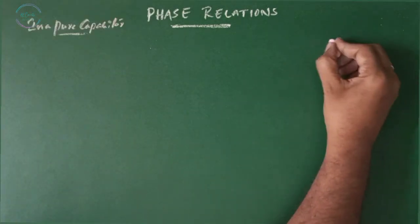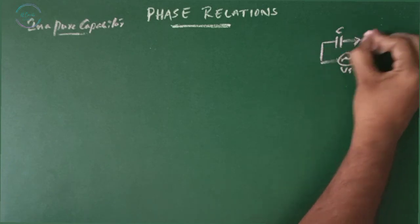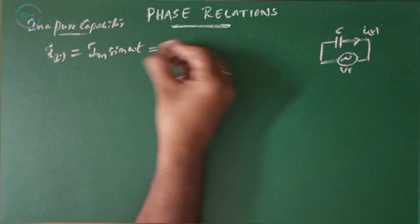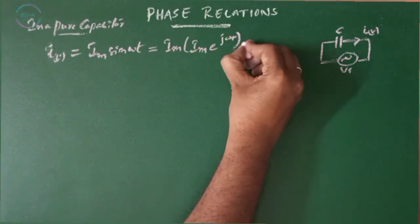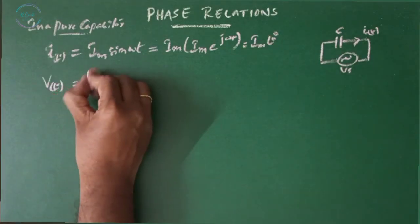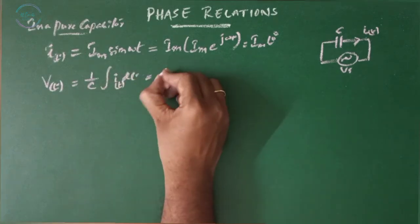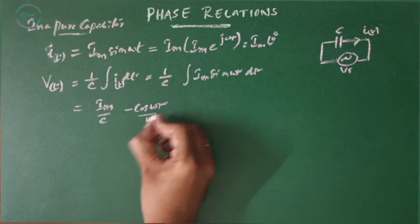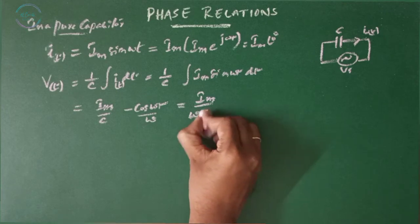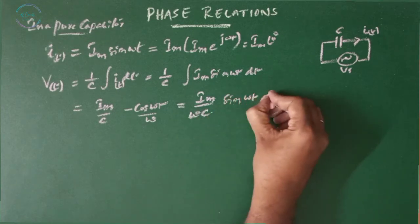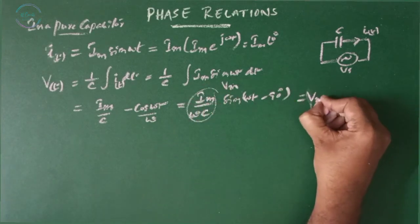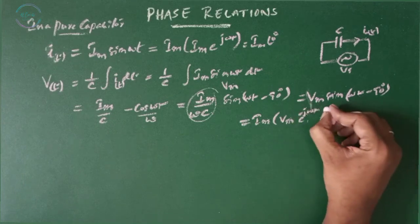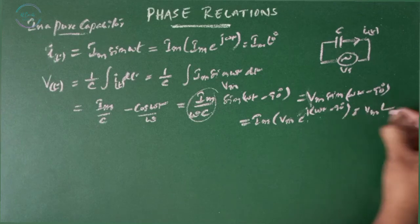Phase relations in the case of a capacitor. If a capacitor C is connected to an AC supply, current I(t) flows. We have I(t) = Im·sin(ωt) = Im∠0°. We know that V(t) = (1/C)·∫I(t)dt. Substituting Im·sin(ωt): V(t) = (Im/C)·(-cos(ωt)/ω) = (Im/ωC)·(-cos(ωt)). Writing -cos(ωt) as sin(ωt - 90°), we get V(t) = (Im/ωC)·sin(ωt - 90°) = Vm·sin(ωt - 90°), which equals Im{Vm·e^(j(ωt-90°))} or Vm∠-90°.